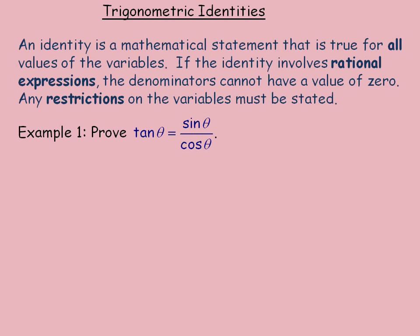The first identity we're asked to prove is that tan θ equals sin θ over cos θ. When you start a trigonometric identity proof, start with usually the more complicated, larger side. RS stands for the right side here. The right side is sin θ over cos θ. Try to simplify to show that it is equal to the other side, which we call the left side. I will start with sin θ over cos θ and show that it equals tan θ.